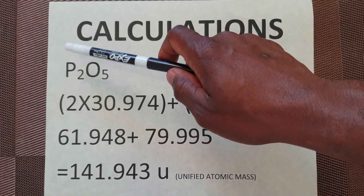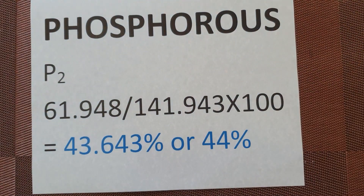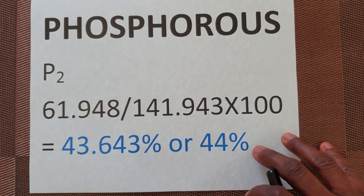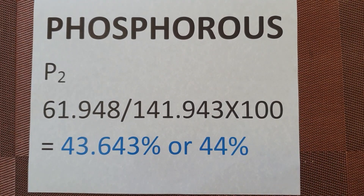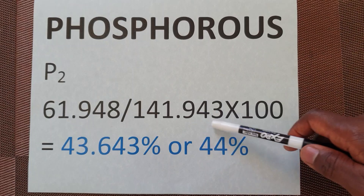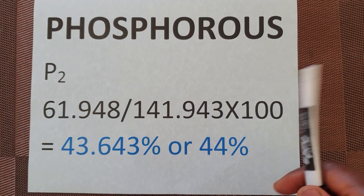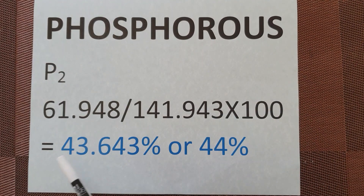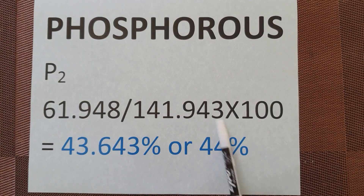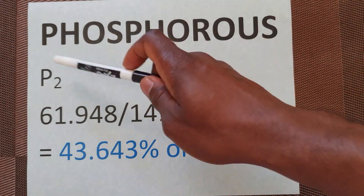This number represents oxygen, but we are trying to find the amount of phosphorus. Therefore, in order to find out the percentage value of phosphorus within P2O5, what we do is we take 61.948 divided by 141.943, which is the combined molecular mass of P2O5, and then we multiply it by 100 to get a percentage value. And that is how we arrive at 43.643%, which we round off to 44%.